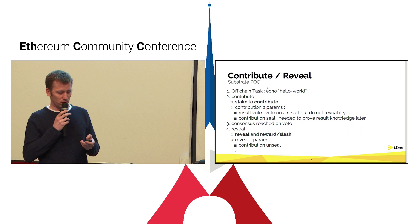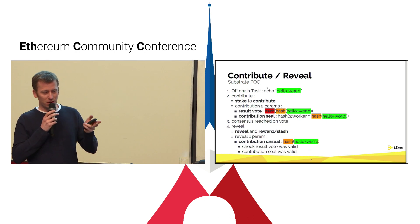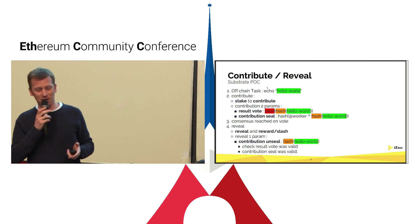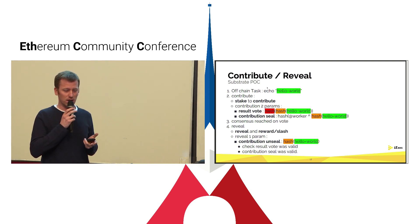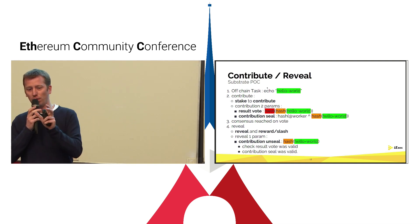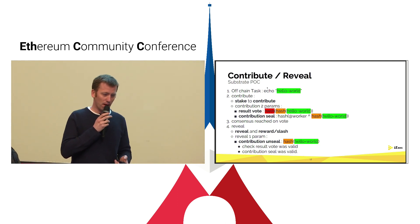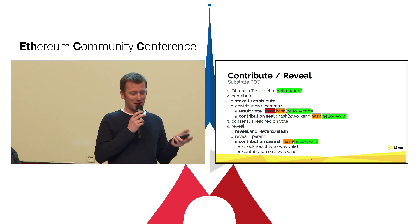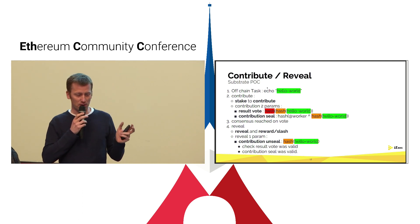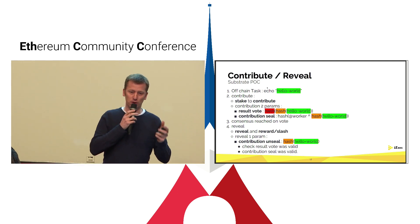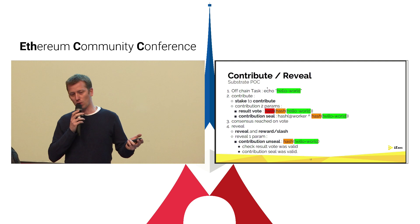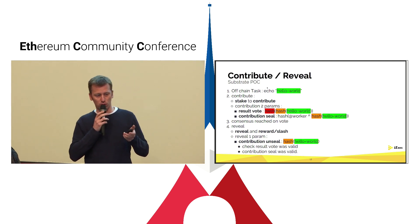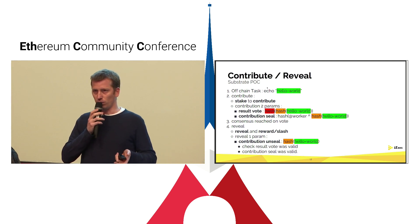Looking at the visual: when you vote, there are two levels. When the contribution is sealed and when you reveal, you reveal one part of the previous level. The runtime checks that the result vote was valid and that the contribution seal was valid. After that, it can trigger payment to reward actors like workers. This was just an introduction to our economic game for the off-chain compute.